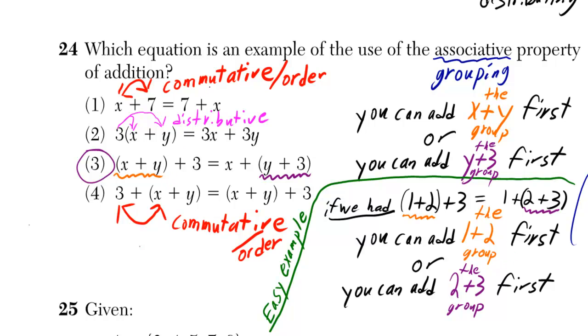Example one and example four are both examples of the commutative property, which is sometimes called the order property because you are switching the order in which you add. Example two is an example of the distributive property.